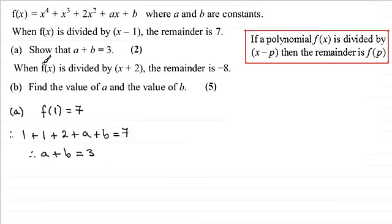Okay, now we move on. When f(x) is divided by x plus 2, the remainder is minus 8. And for the second part, we've now got to find the value of a and the value of b for 5 marks. So again, you might like to pause the video at this stage and complete the question. Okay, welcome back then if you had a go at this one.